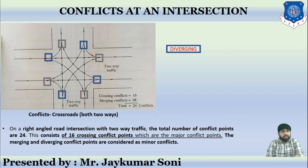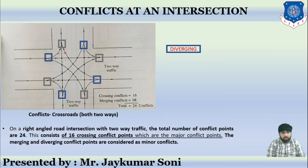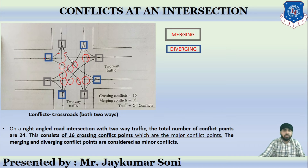After diverging, the flows may meet again at another point. When two flows meet together, that is called merging. You can see two flows meeting here — that is merging; two flows meeting here again — that is also merging. So these are the merging conflict points. Then there are crossing points — where roads are actually crossing each other. These are the crossing conflict points.